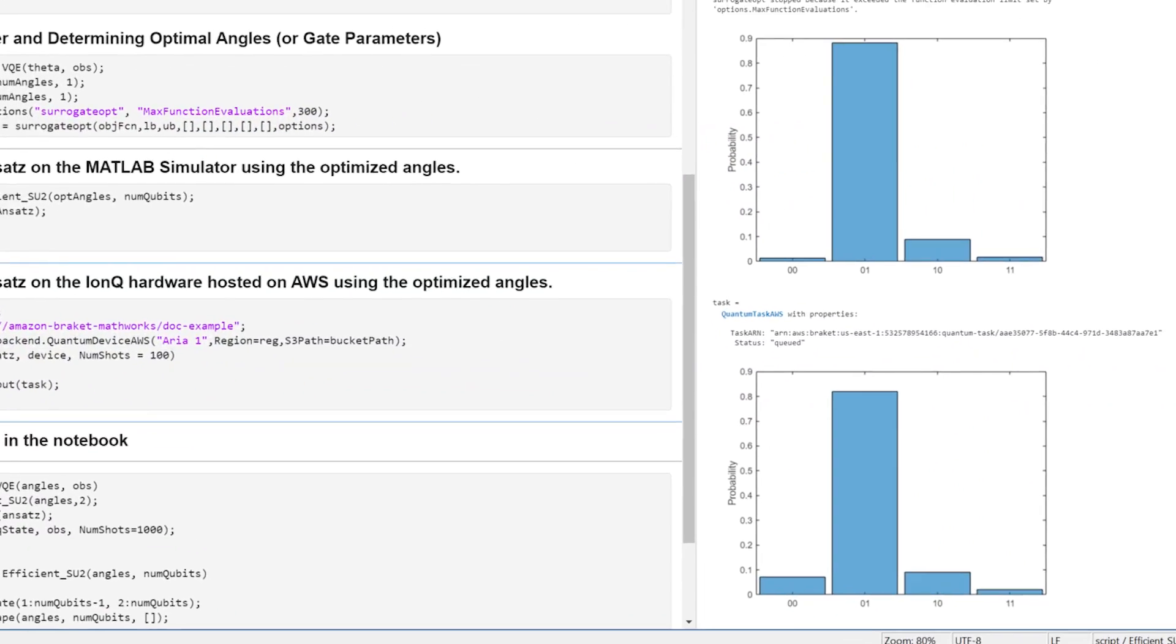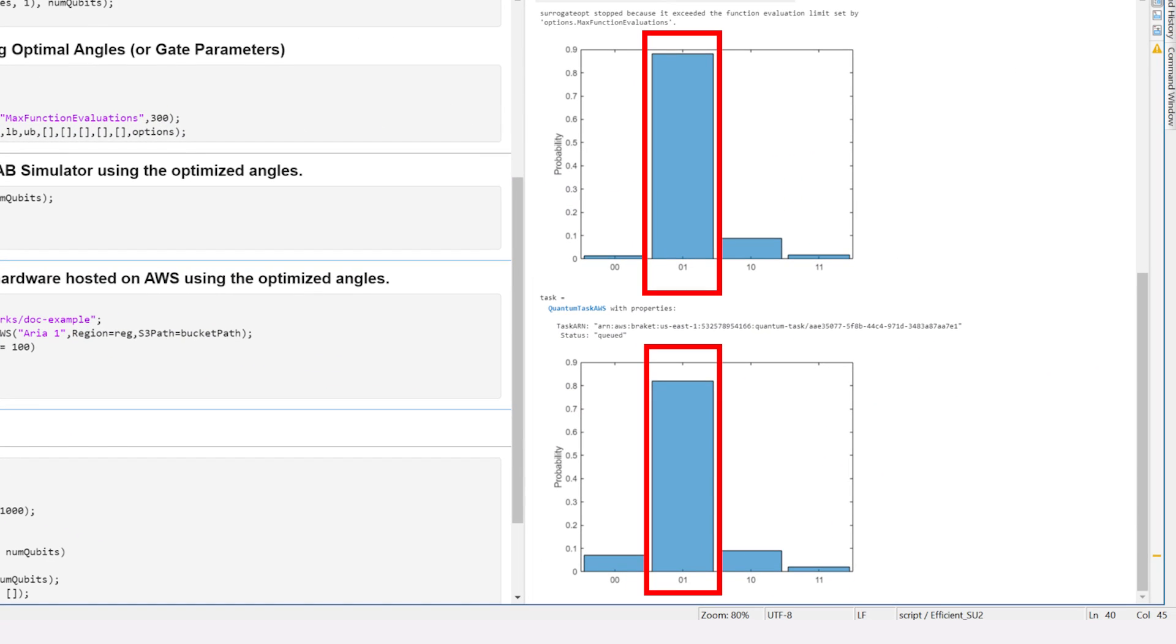Comparing the simulation and hardware results, you will find that both the results show the binary state 01 with highest probability. This verifies our implementation of the VQE on both the MATLAB simulator and the hardware.